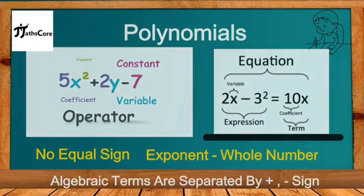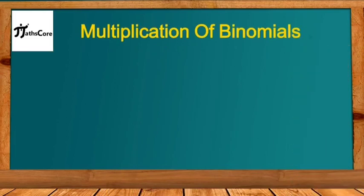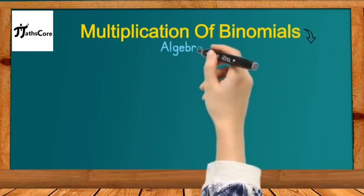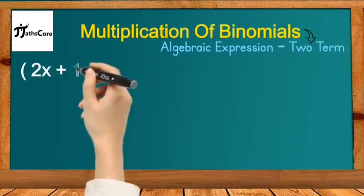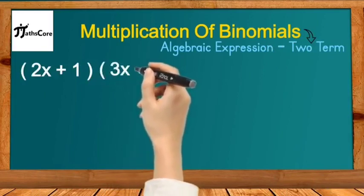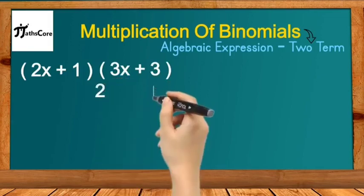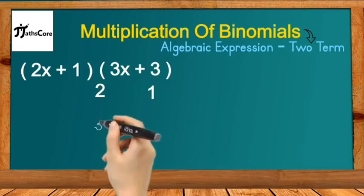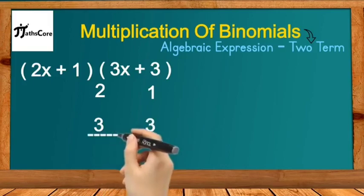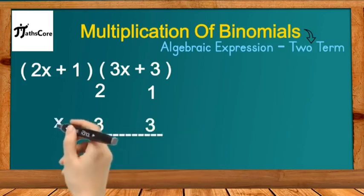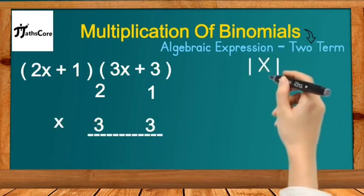Let us solve some examples. First, we'll solve a multiplication of binomials. A binomial is an algebraic expression which contains two terms. The example is: (2x + 3) multiplied by (3x + 3). We will solve this using the Vedic math concept. Write down the coefficients of the first binomial: 2 and 1, then the coefficients of the second binomial: 3 and 3. This is essentially a multiplication of two-digit numbers.